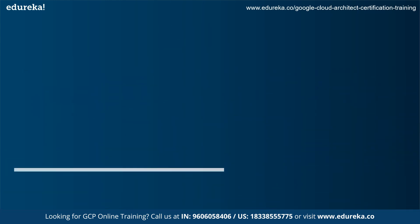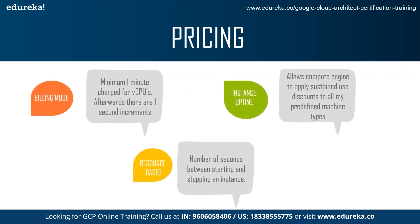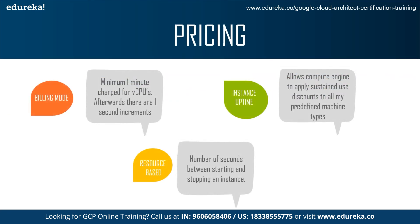Next we talk about pricing. When it comes to pricing, it is based on three major points: the billing mode, the instance uptime, and the resource it is based on. For billing mode, a minimum of one minute is charged for virtual CPUs, with one-second increments thereafter. Instance uptime allows Compute Engine to apply sustained-use discounts to all predefined machine types. Finally, resource-based pricing looks at the number of seconds between starting and stopping an instance.